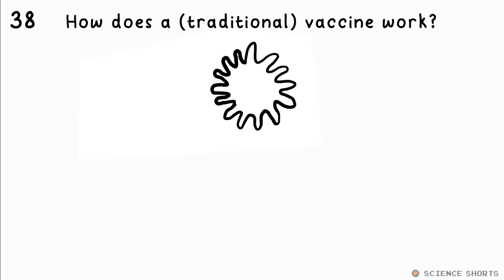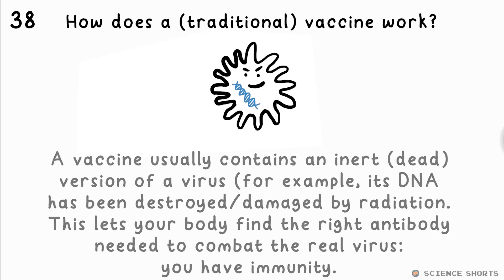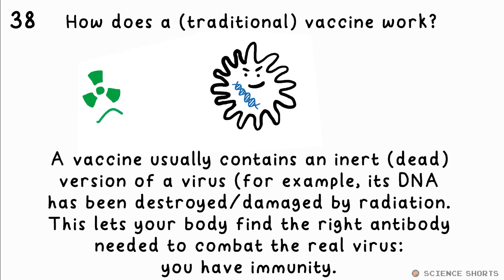Question 38. How does a traditional vaccine work? A normal vaccine is an inert copy of a virus. When injected, it cannot cause more copies of itself to be made, but it means your lymphocytes will have already found the right antibody to produce by the time you encounter the real virus. You now have immunity.